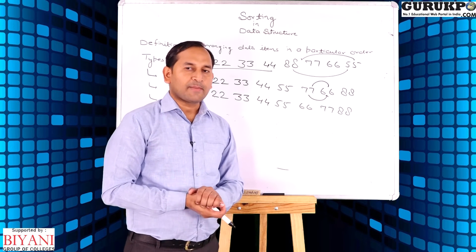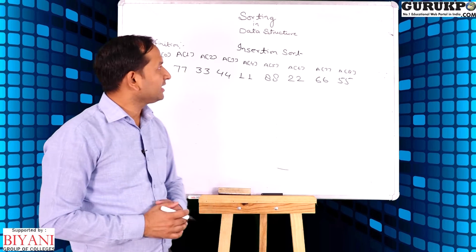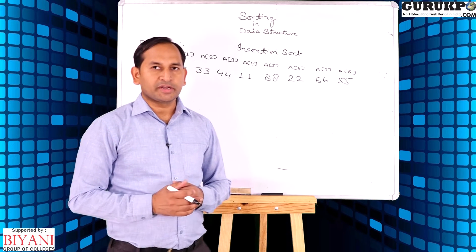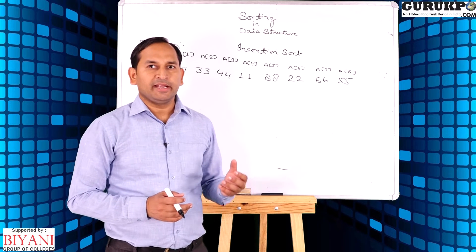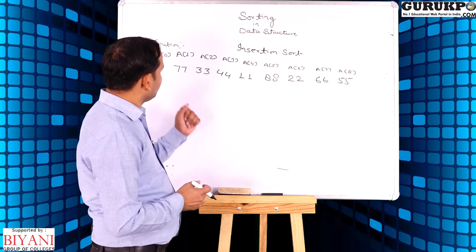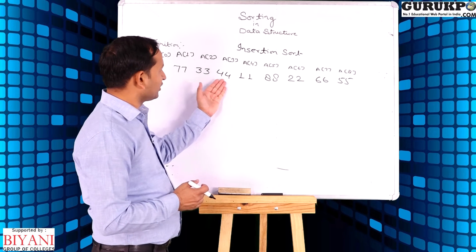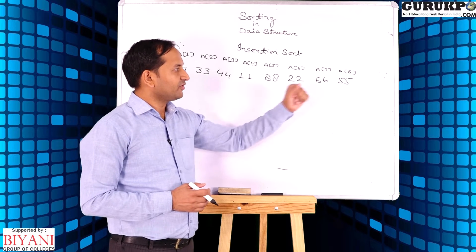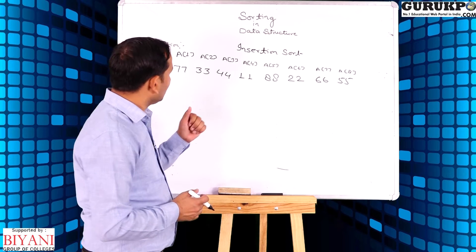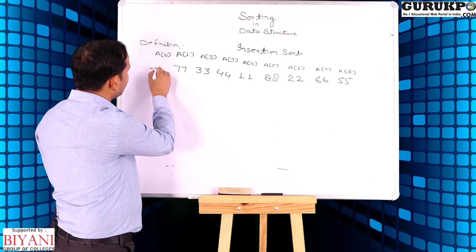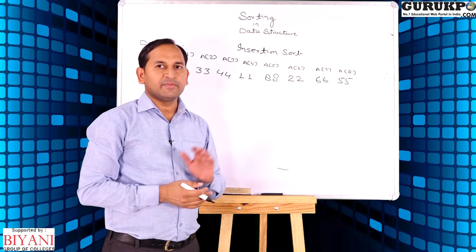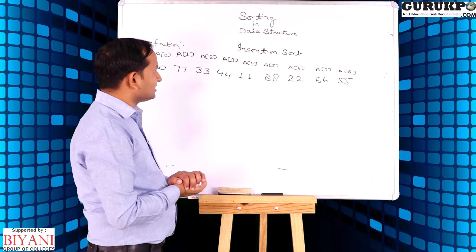Now we discuss the second type of sorting: insertion sort. As the name suggests, in insertion sort we insert each element into its proper location or position. We take the previous example: 77, 33, 44, 11, 88, 22, 66, 55 — all items are in unsorted form. We add a new element that is minus infinity, because it is the smallest element in the entire list. Now we start insertion sort.